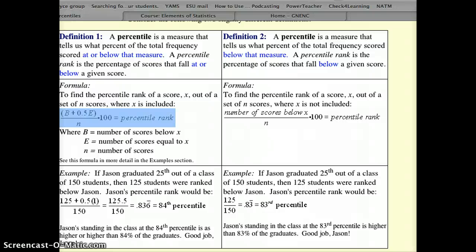B plus 0.5E divided by N times 100. That gives you your percentile rank. B is the number of scores below the score you want. E is the number of scores that are equal to our score. And N is the total number of scores. And we'll come back to definition two in a second.